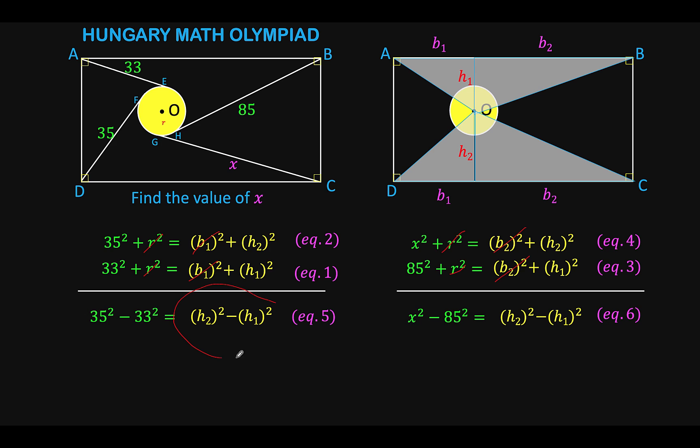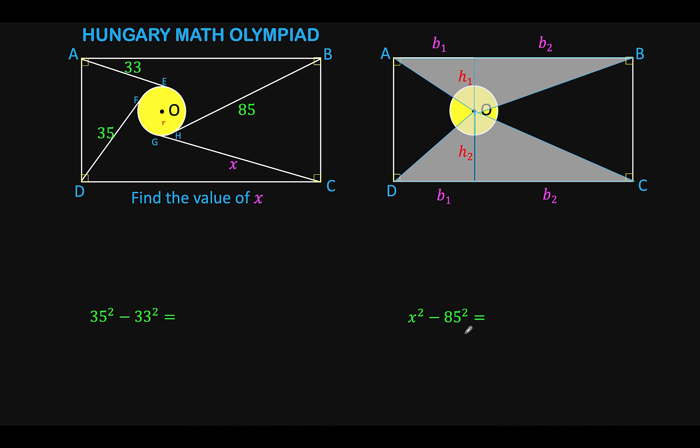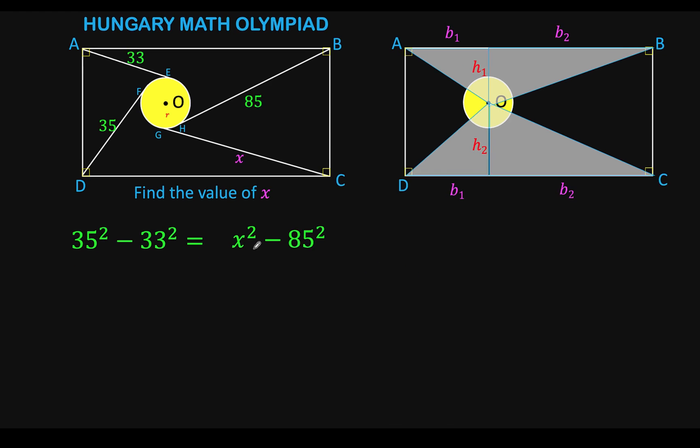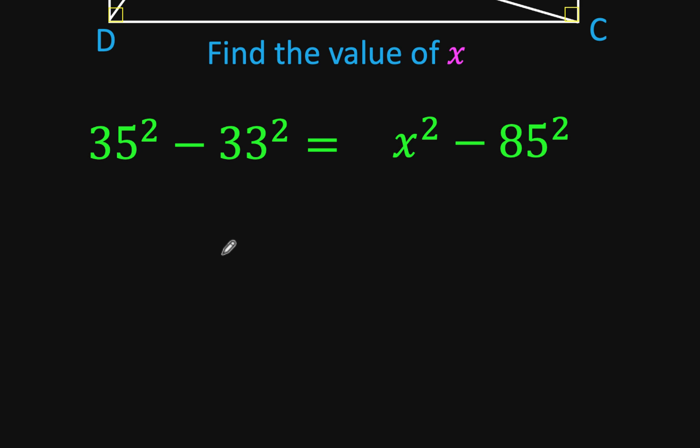Look at this right member here. And look at the right side of this equation here also. Notice that they are exactly the same. So since quantities that are equal to the same quantities are also equal, then this left side here is equal to the left side of the other equation. And this gives us now an equation containing only the variable X. And so we can now find the value of X by simply solving this equation.